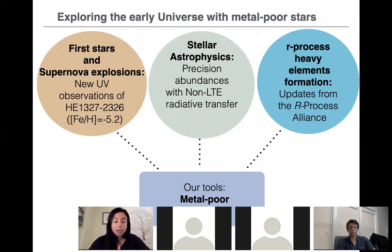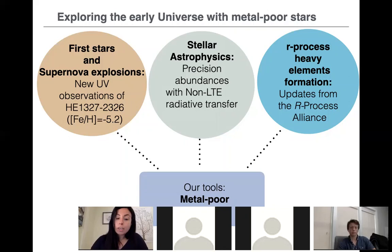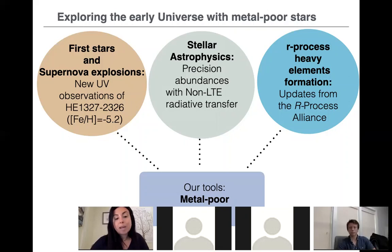The outline of the rest of my talk: I will explain how I use population II very metal-poor stars to understand the first stars and supernova explosions, including some cool results from last year on a very interesting hyper metal-poor star with metallicity below minus five. I will also explain how I use metal-poor stars to determine precision stellar abundances and what they tell us about stellar physics. Finally, I will give updates on how we use metal-poor stars to understand heavy element production via the R-process and our work in the R-Process Alliance.